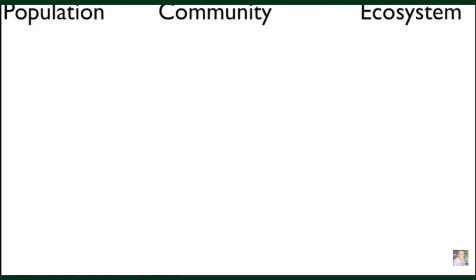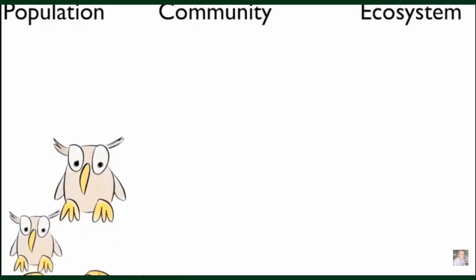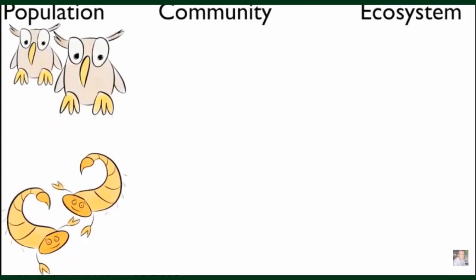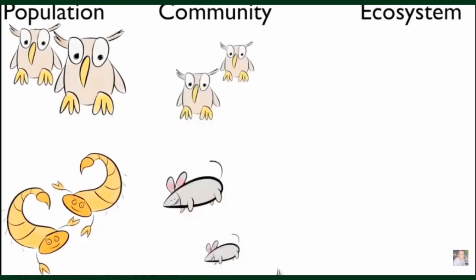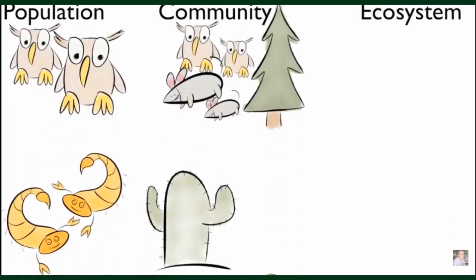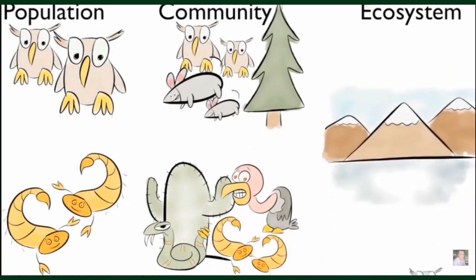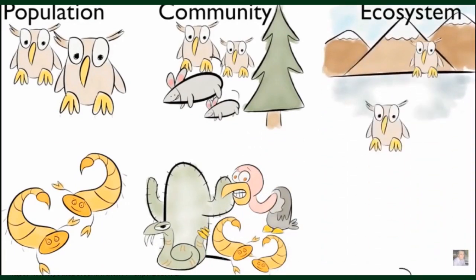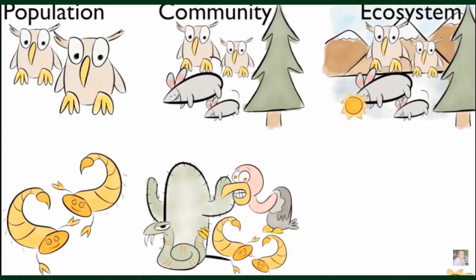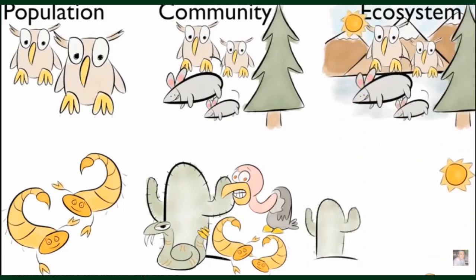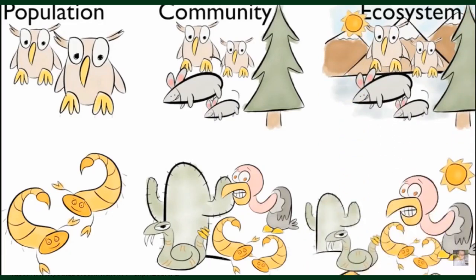Populations are all members of one species. Communities are many populations. Ecosystems include communities and the non-living parts. Population, community, and ecosystem.